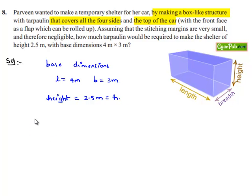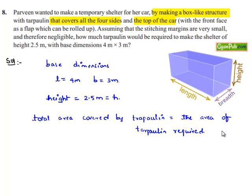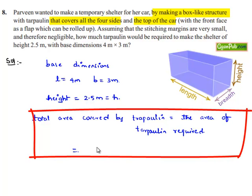So the total area covered by tarpaulin will be equal to the area of tarpaulin required to make the shelter. Since out of top and bottom only the top is covered, the top area will be length × breadth. Plus, all four sides are also covered, so we add the lateral surface area.